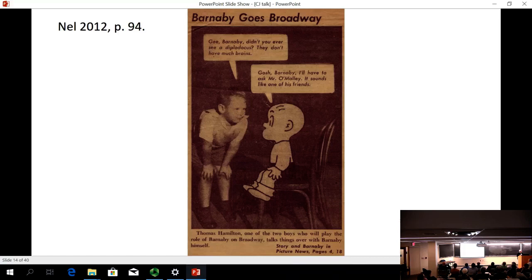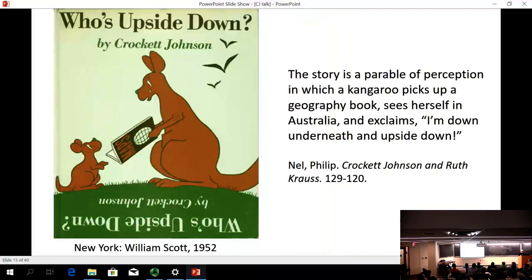The same year that Barnaby ended, C.J.'s first children's book, Who's Upside Down?, was published. His next book that was published was in 1955, and that was the one that is most well known, Harold and the Purple Crayon. His last children's book was published in 1965, at which point he was almost 60 years old.